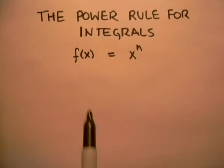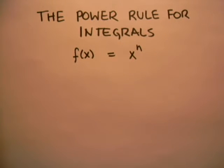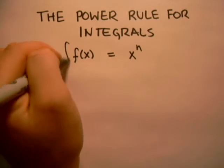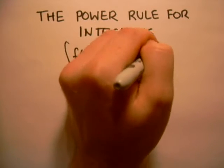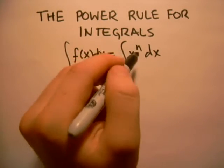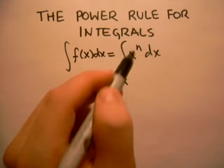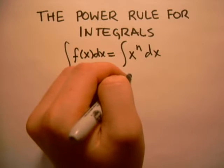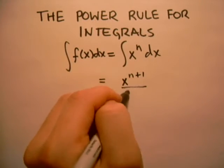If you have some function f of x equals x to the n, then the power rule for integrals states that the integral of f of x with respect to x is simply: you write x, take the power on x and add one to it so you get n plus one, and then you divide by the same number.